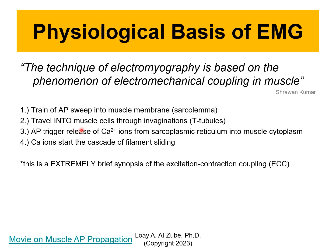This train travels into muscle cells through invaginations called T-tubules. When the action potential reaches the muscle fiber membrane, it flips — usually negative inside — then a second messenger triggers the release of calcium ions from the sarcoplasmic reticulum into the muscle cytoplasm. Once that happens, the calcium ions start the cascade of the filament sliding. That's the action potential — a very brief description of what's going on inside the muscle fibers.